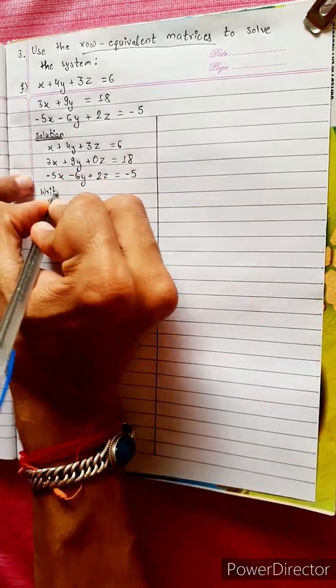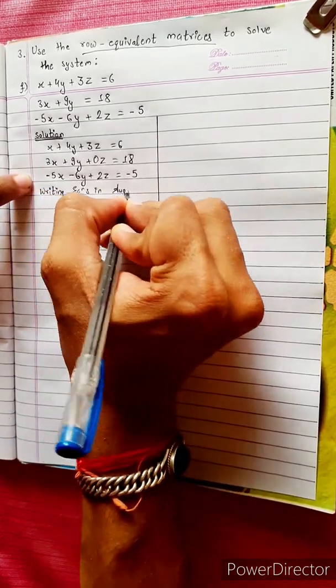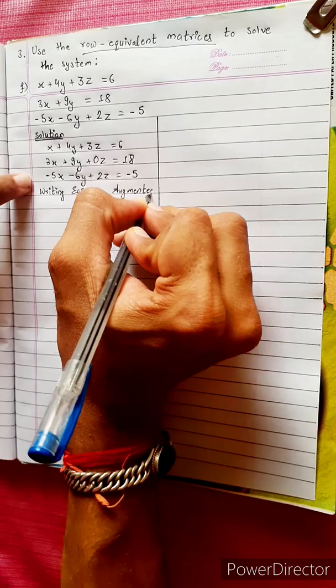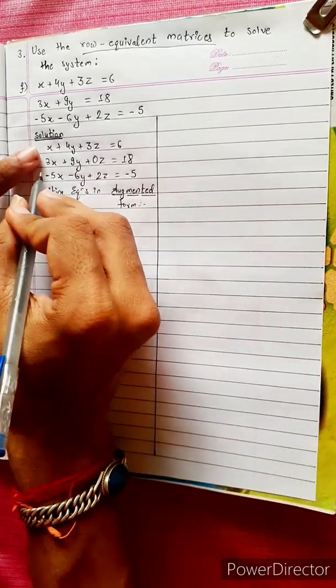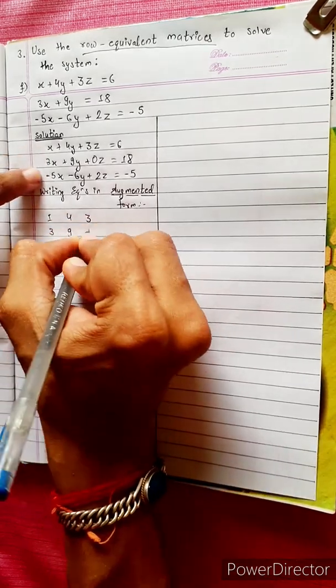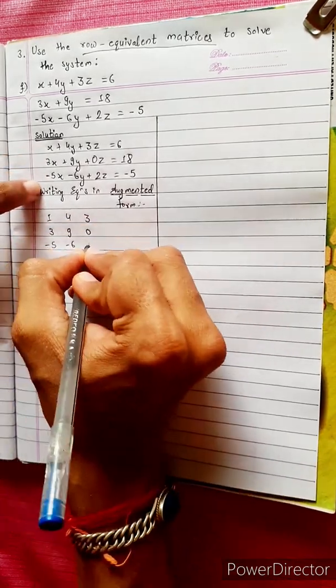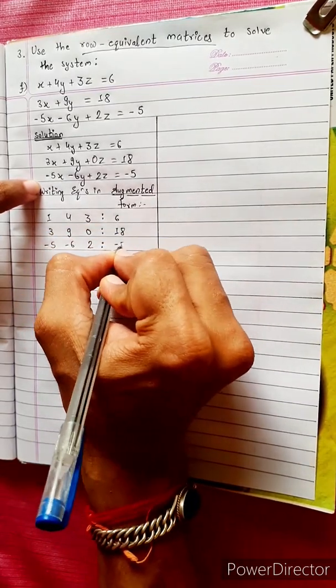We will write the equations in augmented matrix form. The augmented matrix is: 1, 4, 3 is to 6; 3, 9, 0 is to 18; minus 5, minus 6, 2 is to minus 5.